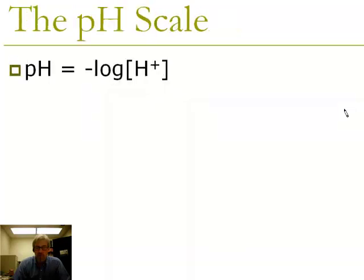pH is really a measure of acidity, and it uses a logarithmic scale — not a linear scale. So pH 6, pH 8, and pH 10 are different distances from each other between 6 and 8, and between 8 and 10. That's one of the consequences of a logarithmic scale. pH is defined as the negative base-10 logarithm of H⁺ concentration.